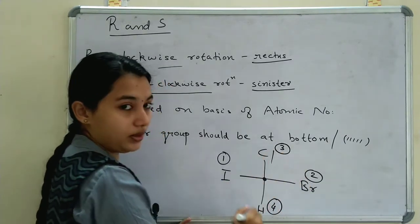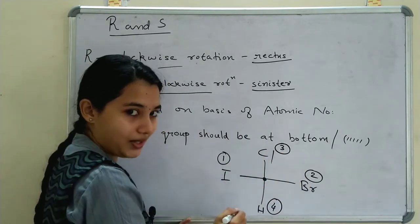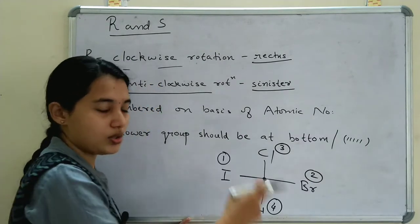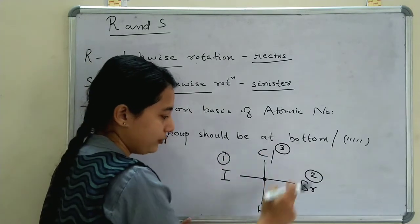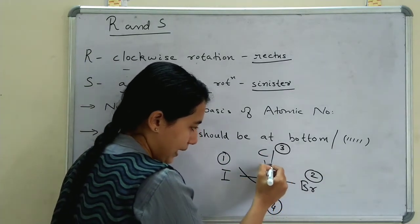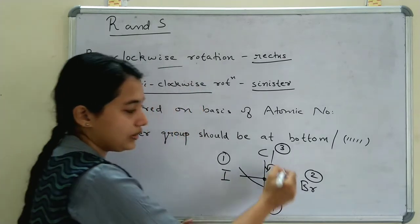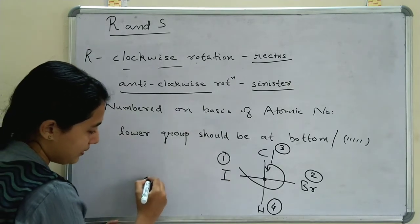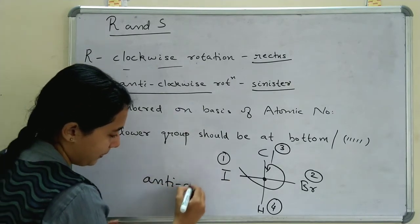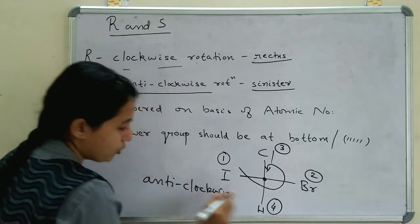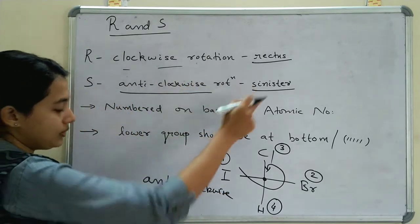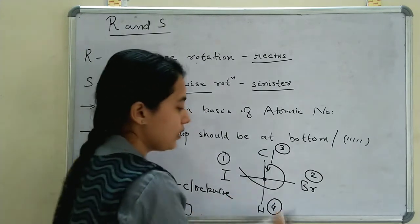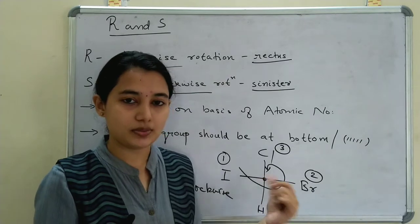Now we rotate from substituent 1 to 2 to 3. In this case, rotating 1→2→3 gives an anticlockwise rotation. For anticlockwise rotation, the configuration is S. So the configuration of this carbon atom is S.